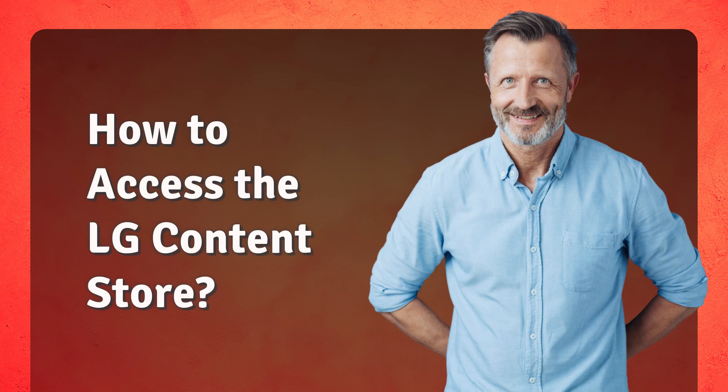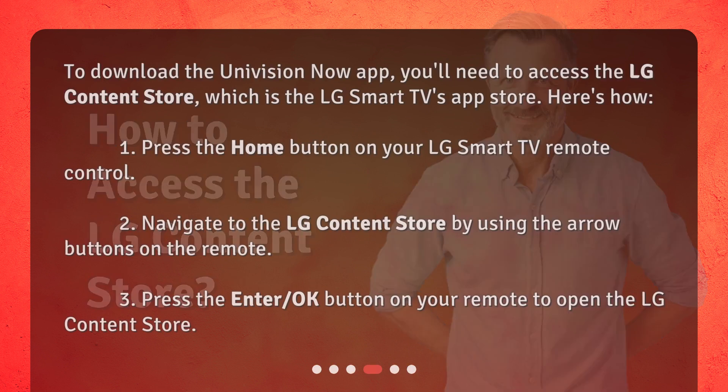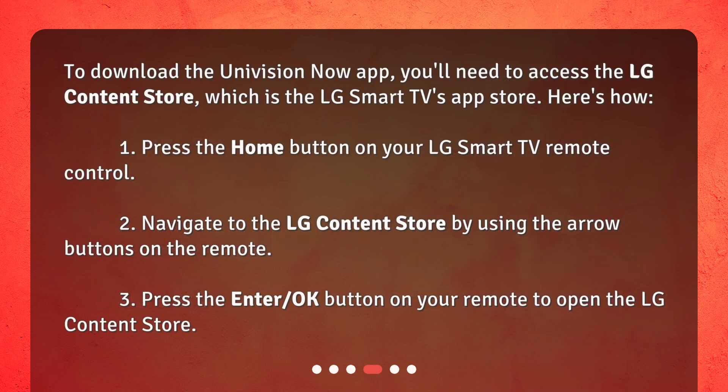How to access the LG Content Store? To download the Univision Now app, you'll need to access the LG Content Store, which is the LG Smart TV's app store. Here's how: 1. Press the Home button on your LG Smart TV remote control. 2. Navigate to the LG Content Store by using the arrow buttons on the remote. 3. Press the Enter OK button on your remote to open the LG Content Store.